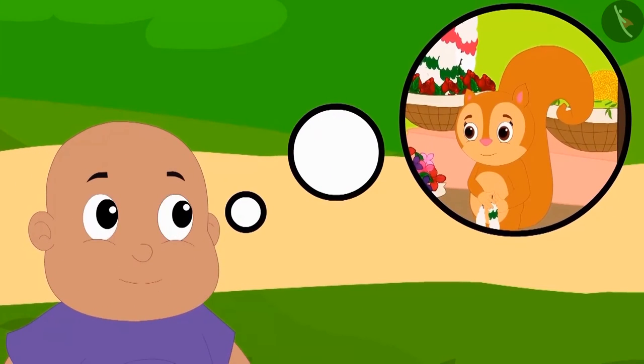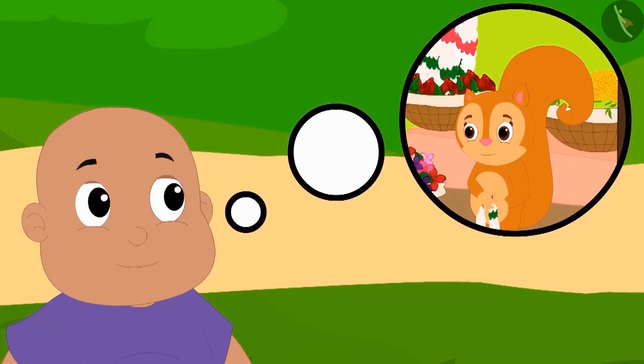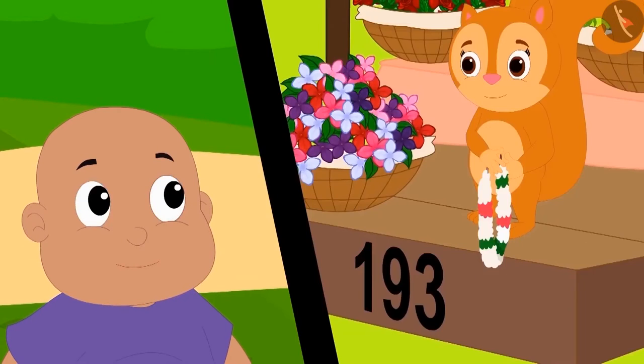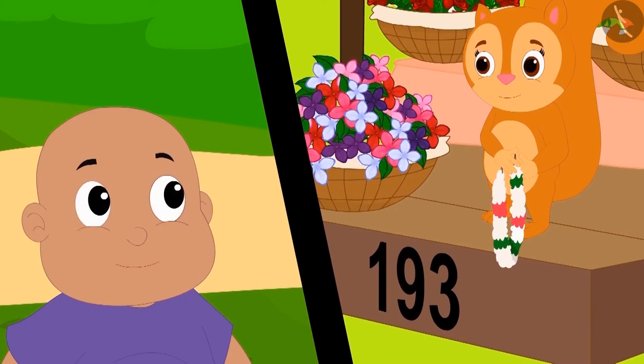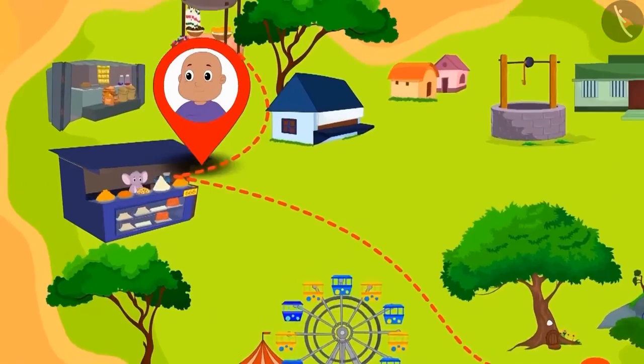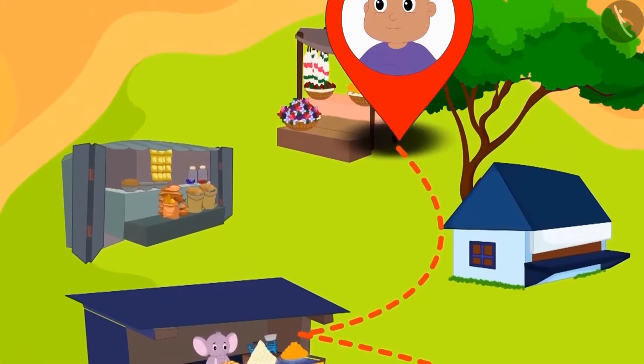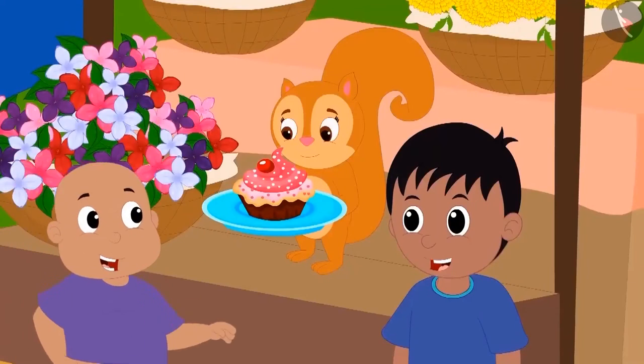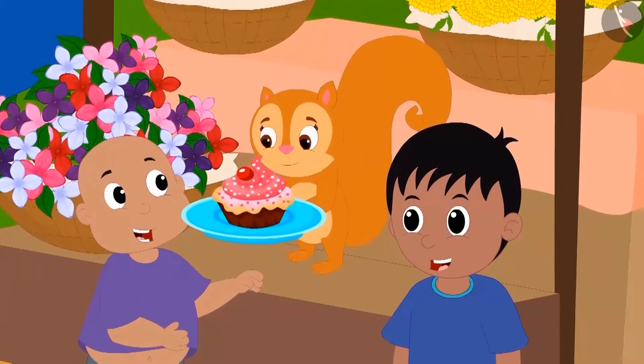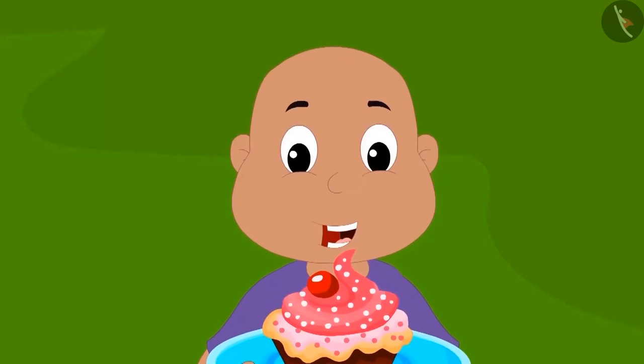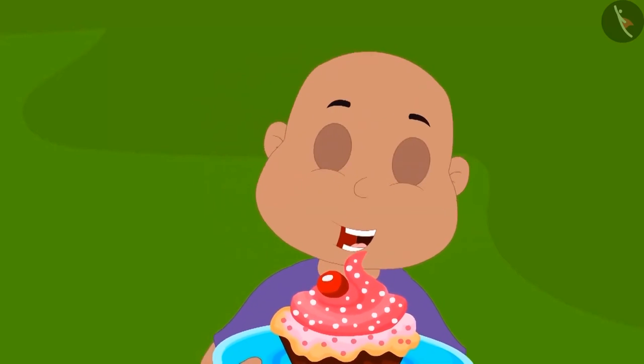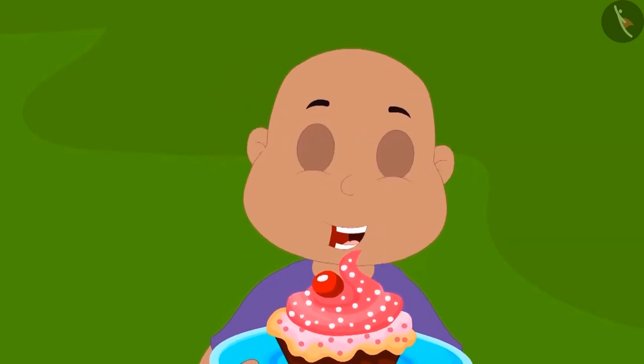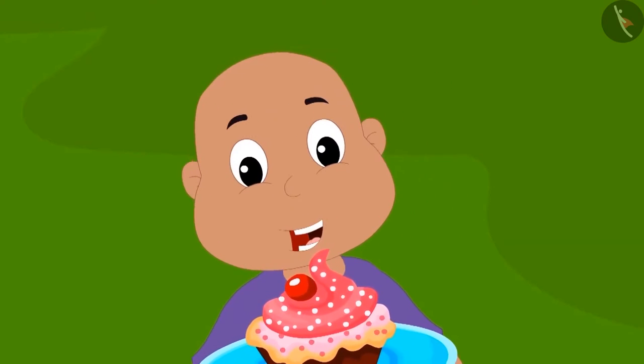Bablu remembered he had seen this number at Chanda's shop and thought that it may be his last location. With this thought, Bablu went to Chanda's shop. On reaching there, Bablu saw that Raju had hidden a cake to celebrate his birthday. Look how happy Bablu looks.